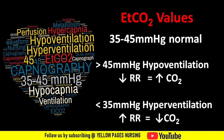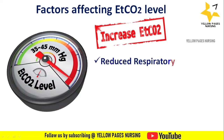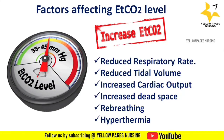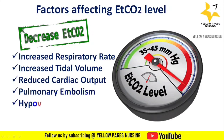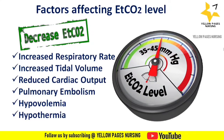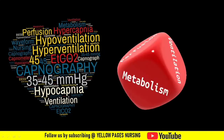In hyperventilation, gas exchange increases and thereby EtCO2 decreases. Causes of increased EtCO2 include: reduced respiratory rate (hypoventilation), reduced tidal volume, increased cardiac output, increased dead space, rebreathing or breath stacking, and hyperthermia. Causes of reduced EtCO2 include: increased respiratory rate (hyperventilation), increased tidal volume, reduced cardiac output, pulmonary embolism, hypovolemia, and hypothermia.